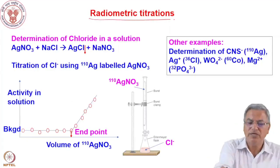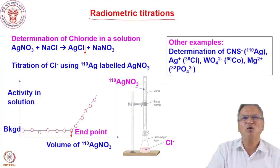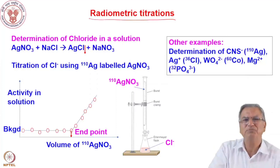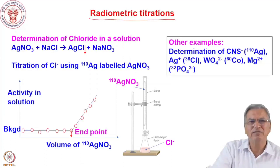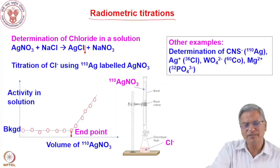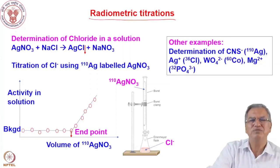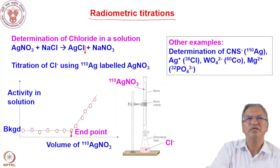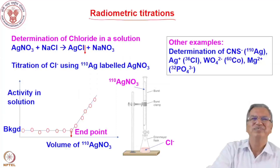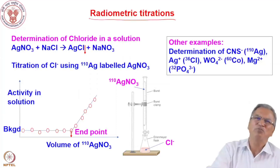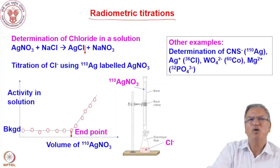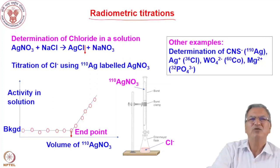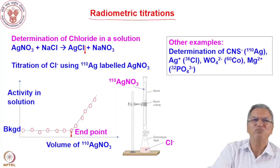Let me discuss some radioanalytical techniques which are commonly used — many have become obsolete because better techniques are now available. One of them is radiometric titrations. You use a radio tracer and do a normal precipitation titration. You go on adding the reagent and find the equivalence point. For example, to determine chloride concentration, silver chloride is insoluble, so you take silver nitrate as the titrant.